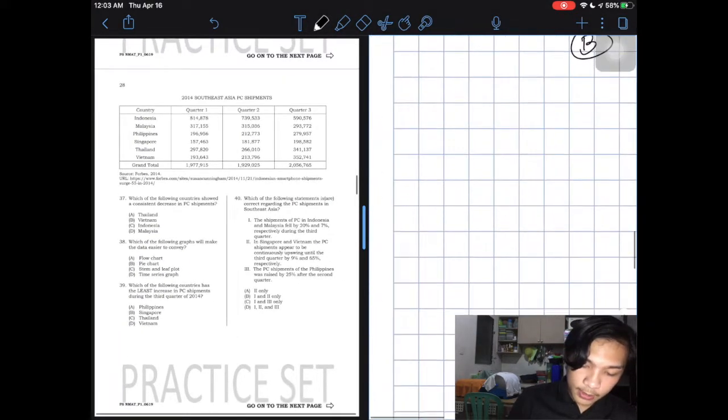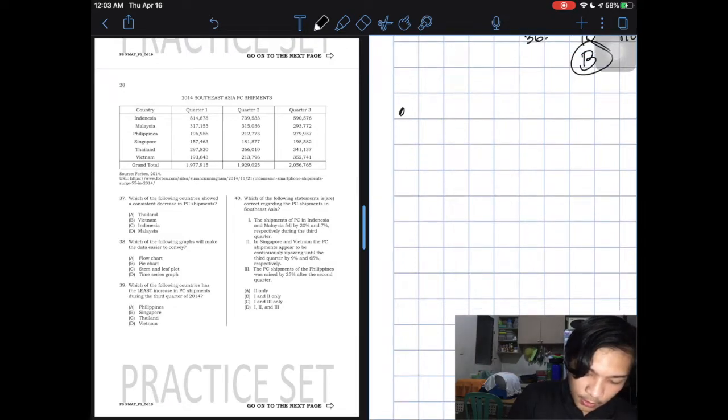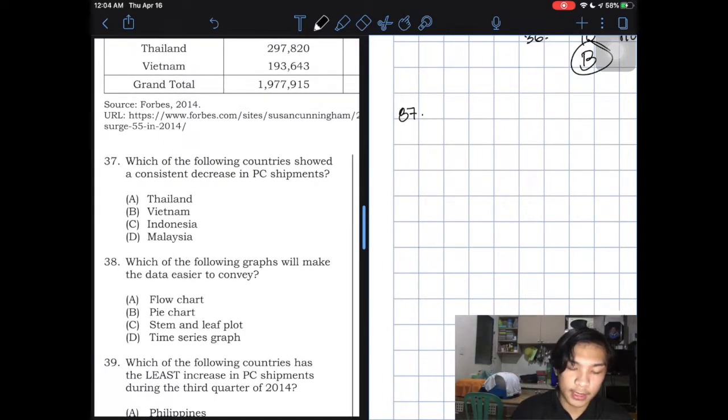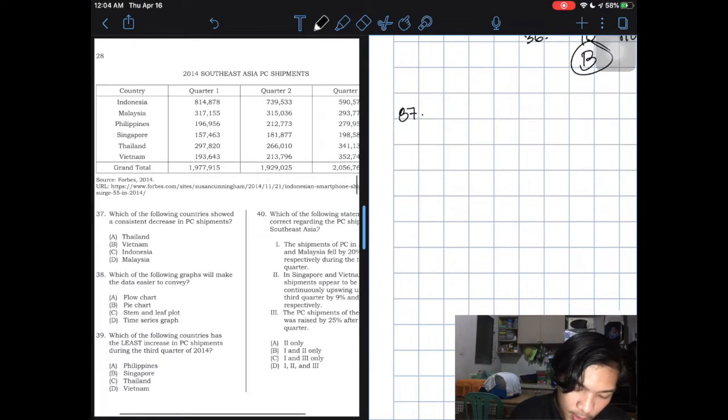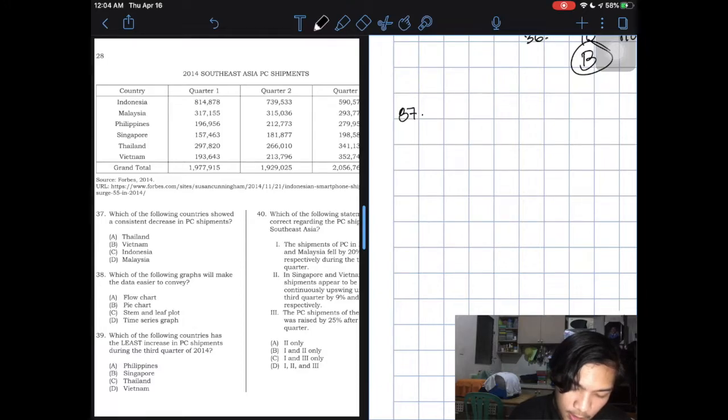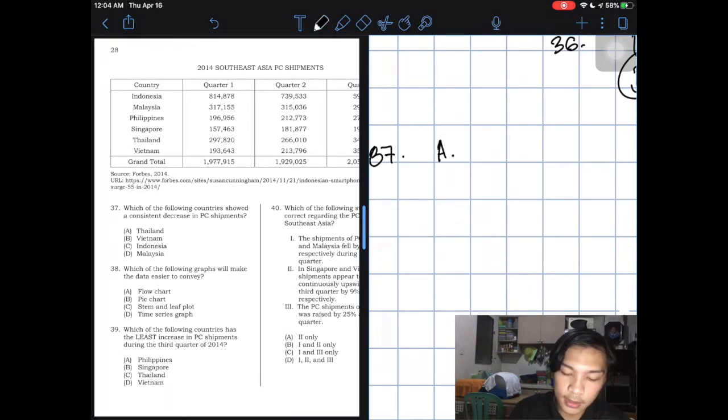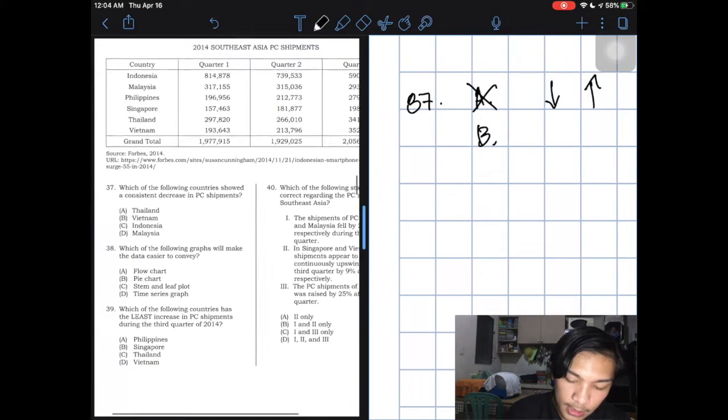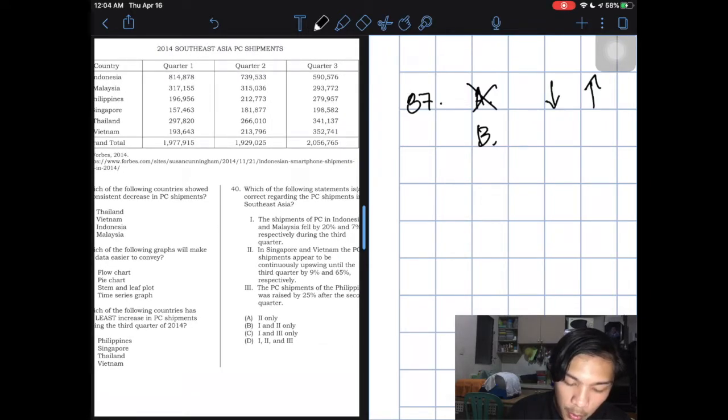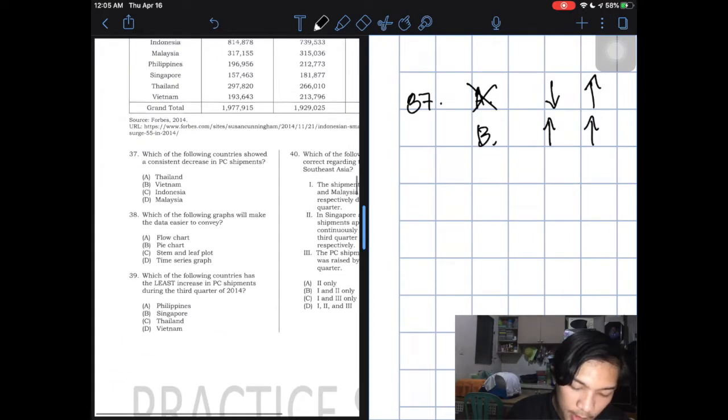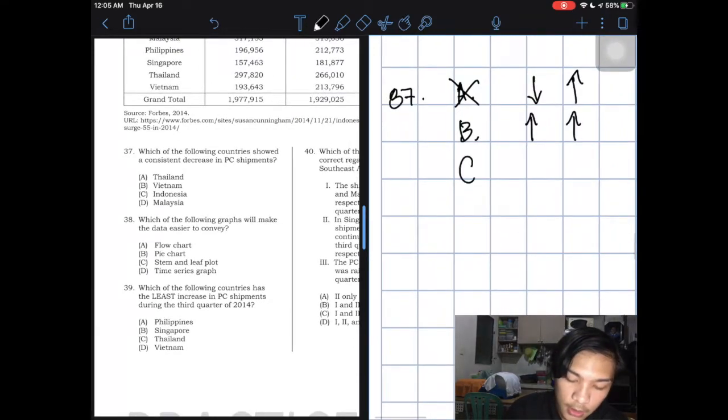This is our last one. Number 37. Which of the following countries showed a consistent decrease in PC shipments? Check. Thailand, 297, 266. Automatic Thailand. Automatic we can see that letter A, Thailand, is not the answer. Because in the second quarter, it decreased, and then in the third quarter, it increased. Letter B, Vietnam. We can see immediately from 193, became 213. There's an increase. And then 213 became 352. There's another increase. But the question here is a consistent decrease in PC shipments. So this is not the answer.